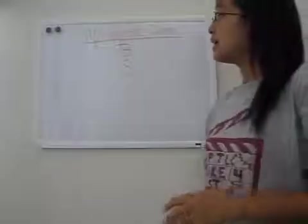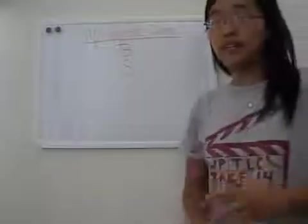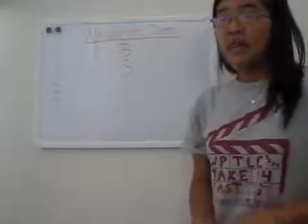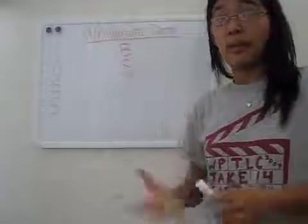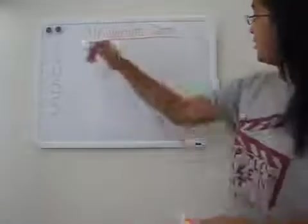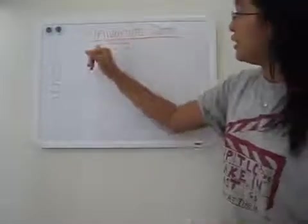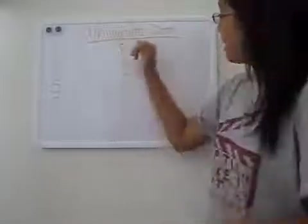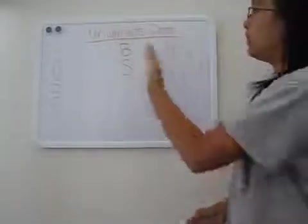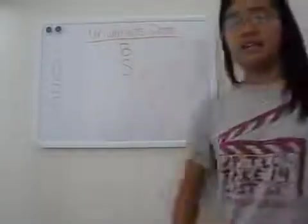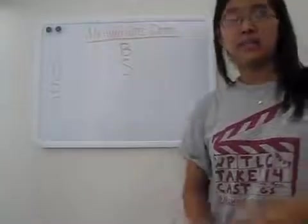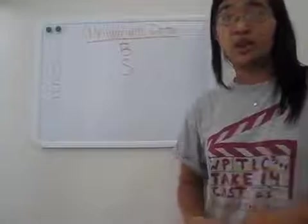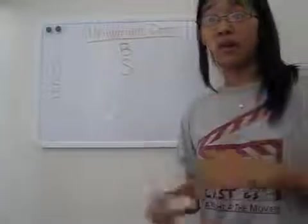Hey guys, so today I'll be talking about univariate data. Basically what that means is — uni means one, variate means variable. So univariate data is information that is based on one variable.